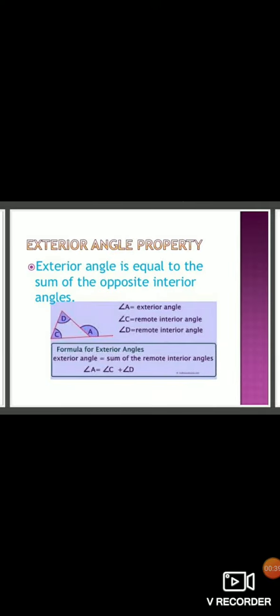Exterior angle property: the exterior angle is equal to the sum of opposite interior angles. This means if you want to find the exterior angle, you will have to add the opposite interior angles. Like this, we will find...